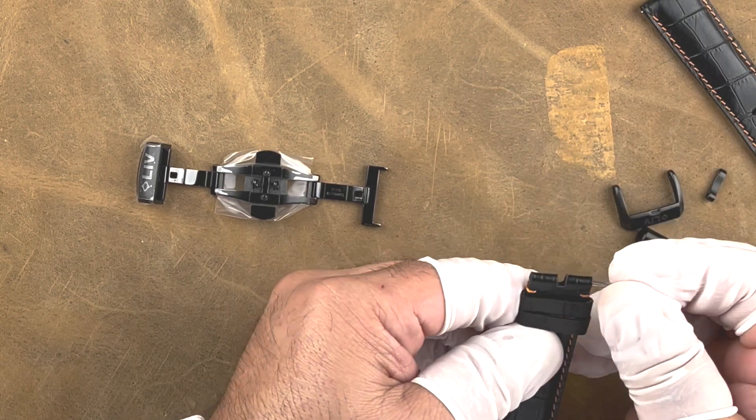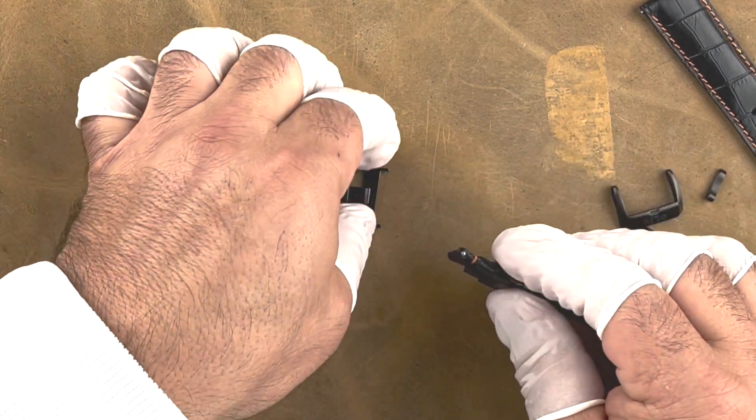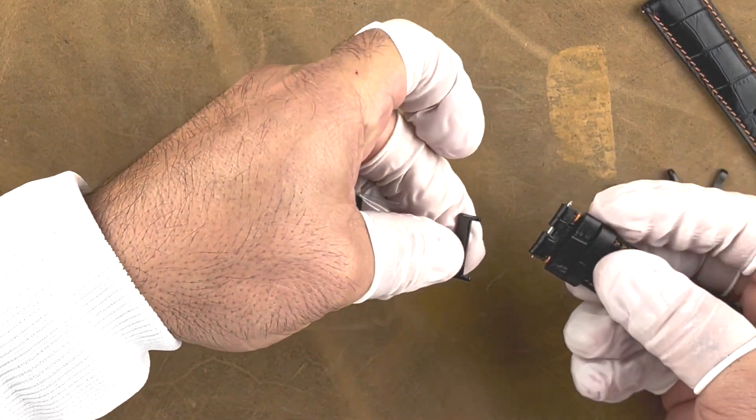Now, put the spring bar into the strap and line it up with the right side of the deployant clasp, making sure that the strap is facing up.